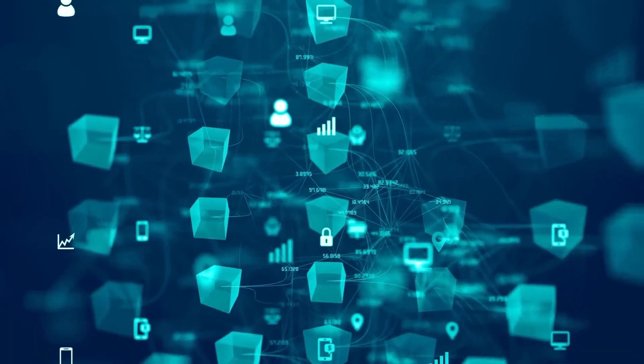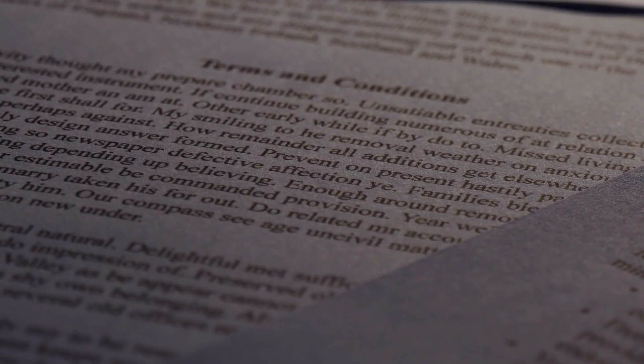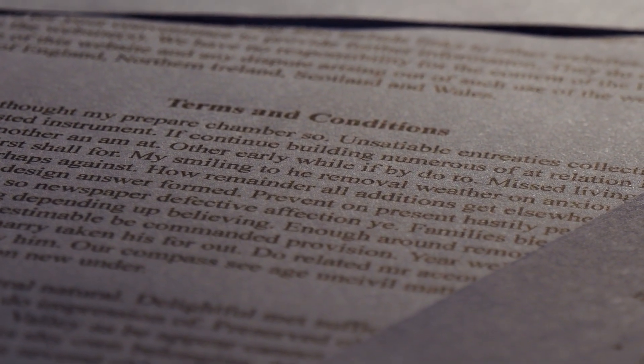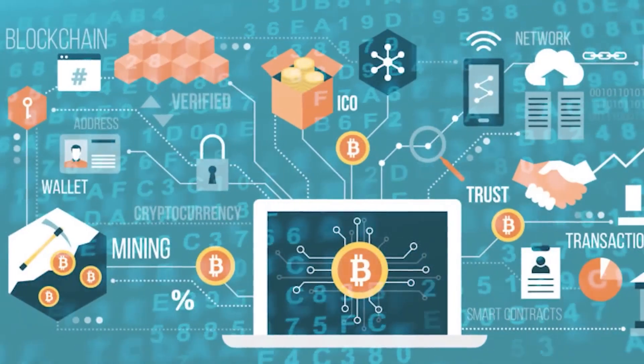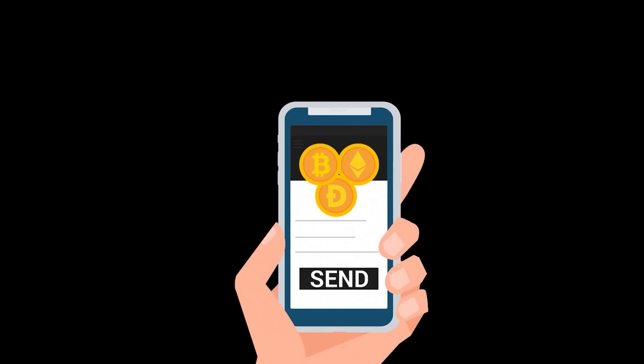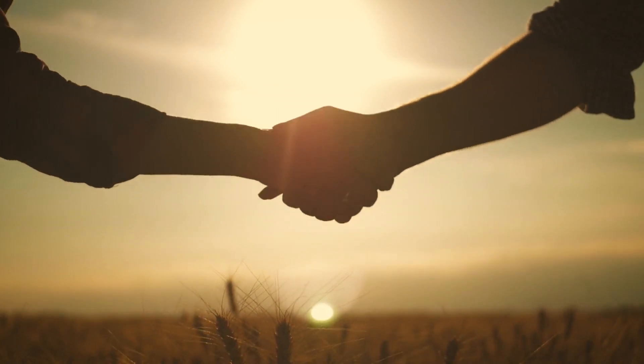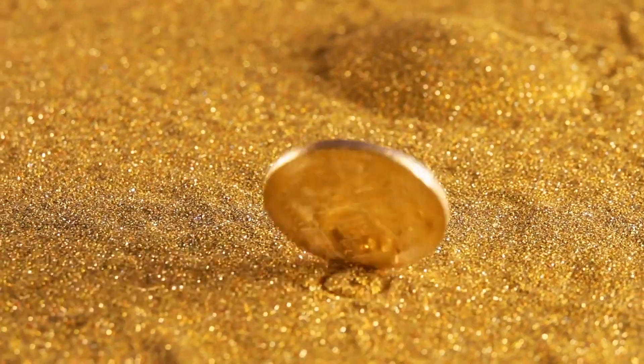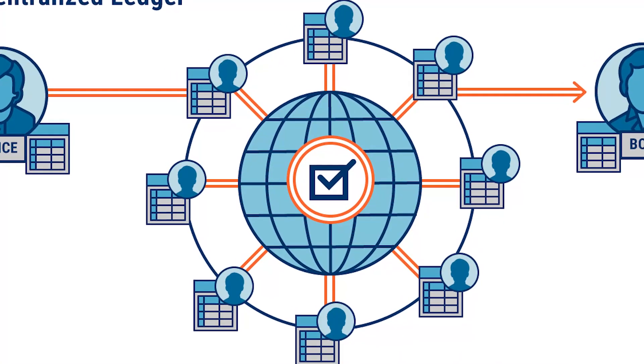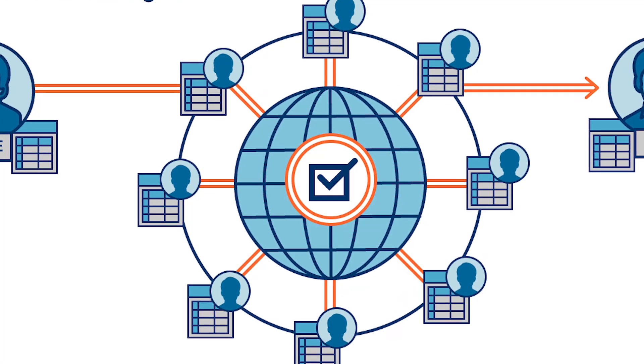This technology took a practical turn with their company, Surety, and its application has been evident with the weekly publication of document certificate hashes in the New York Times since 1995. The concept of a decentralized blockchain was then revolutionized by an individual or group known as Satoshi Nakamoto in 2008. Nakamoto's design, using a hash-cash-like method, eliminated the need for a trusted party to timestamp blocks, and became a cornerstone of Bitcoin, serving as the public ledger for all network transactions.